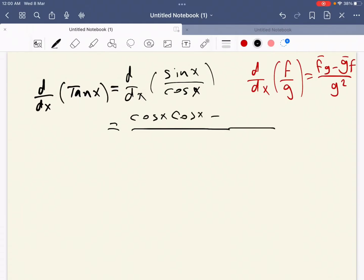This time minus the derivative of the denominator, which is minus sine x, times sine x, over the denominator squared, which is cosine squared of x.